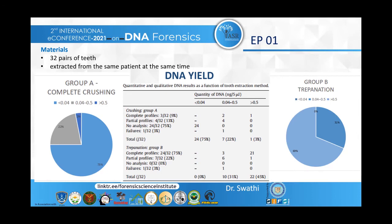In Group B, an occlusal cavity was made using a small spherical burr. The pulp was removed using a barbed broach and placed in an Eppendorf tube. For DNA extraction, both groups were digested using proteinase K with tissue-specific reagents from the Qiagen kit, and then genetic fingerprinting was performed.